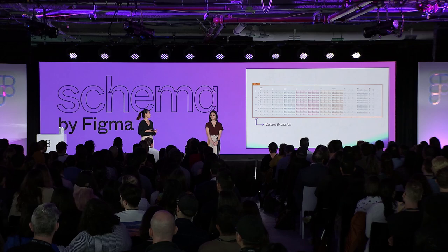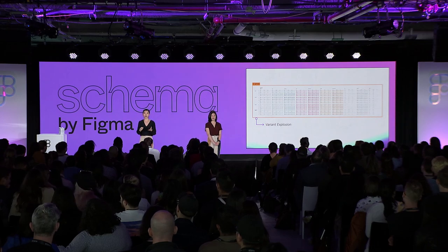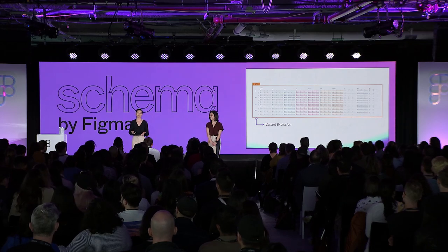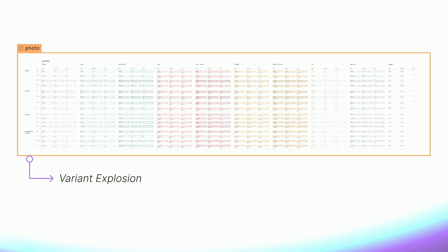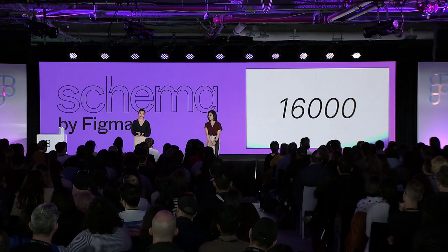The largest number of variants in a component set is actually 16,000, which is a huge number of variants to maintain. So to get around this complexity, some design systems authors have started using what's known as base components in their design systems.